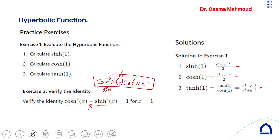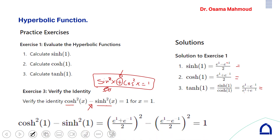To prove it, substitute cosh(x) = (e^x + e^(−x)) / 2 and sinh(x) = (e^x − e^(−x)) / 2, square each, expand, and after simplification you will get 1.